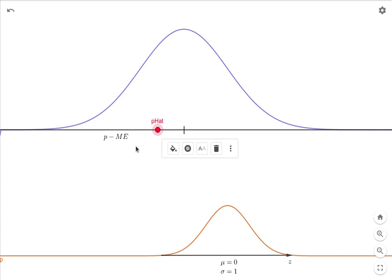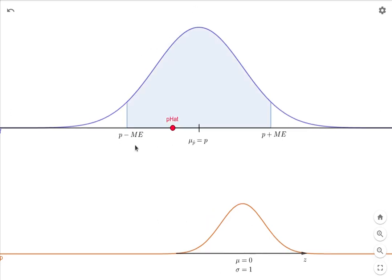What we'd like to do is find some margin of error, so if we subtracted the margin of error from the mean of this distribution, then the area between those two values is 90%. Now we don't know what p is, but if we could find this ME so that that was the case, then we would know that our p hat has a 90% chance of being between this value and this value. Of course there's a 10% chance that it's outside of there.